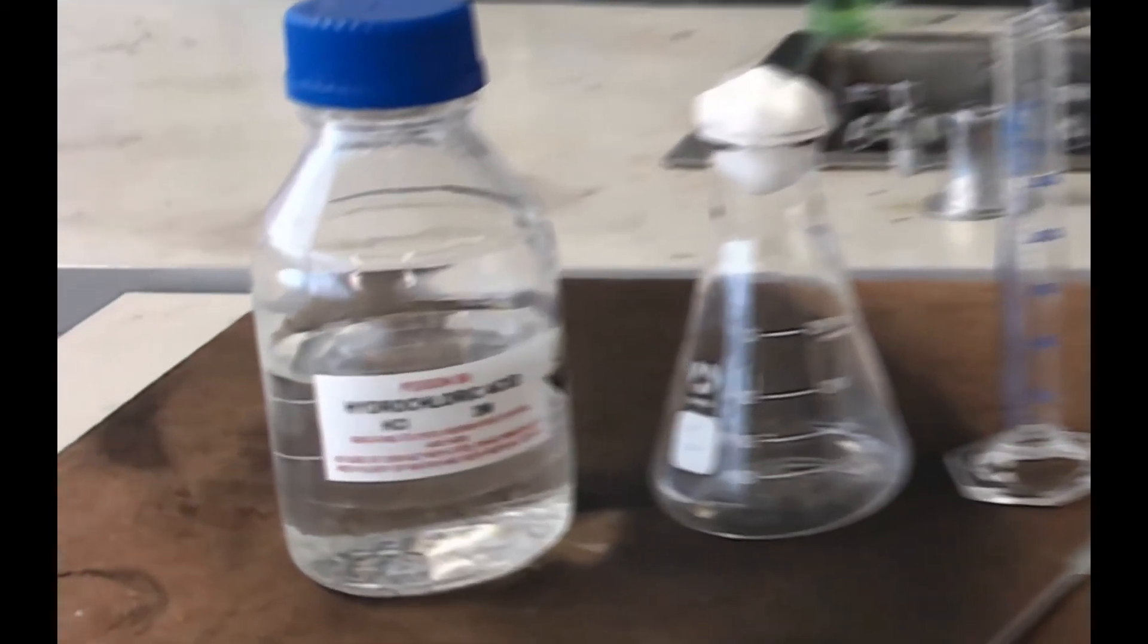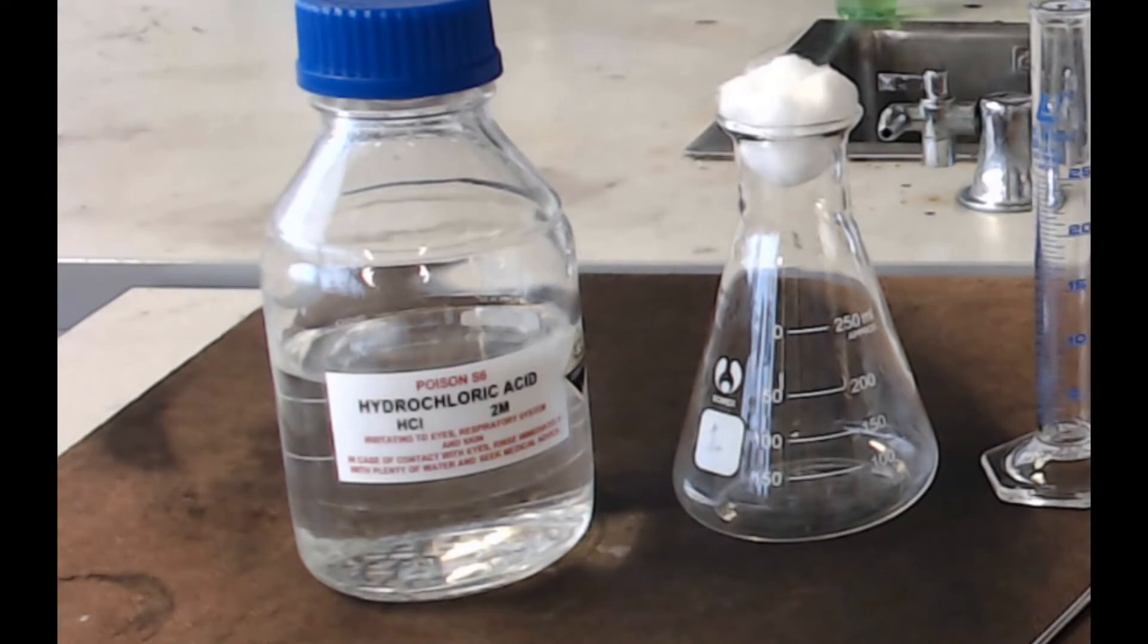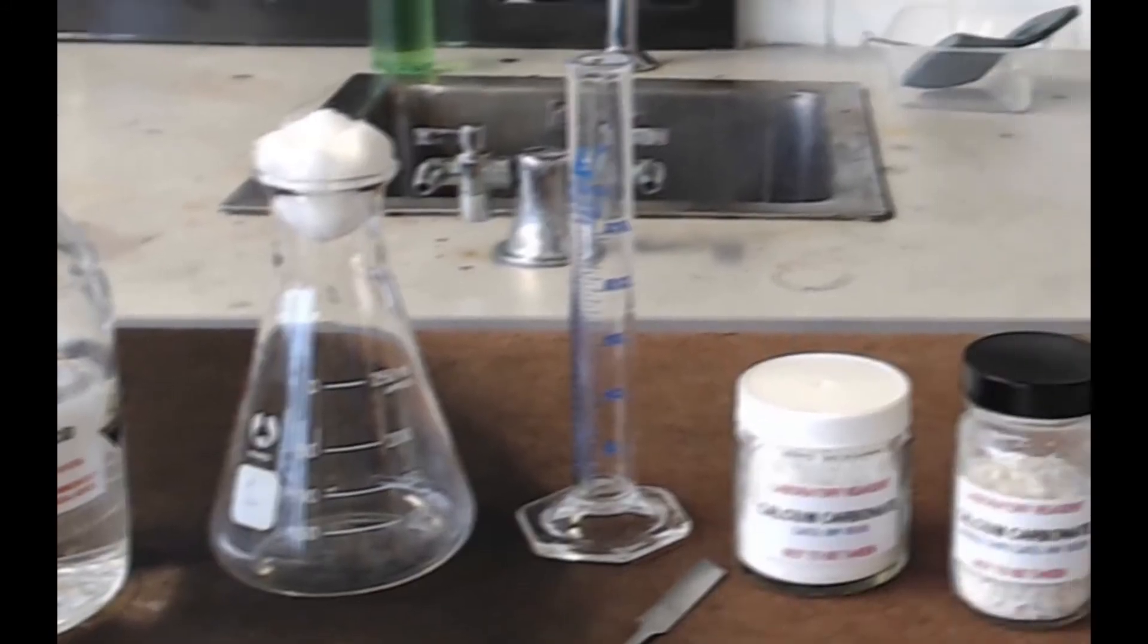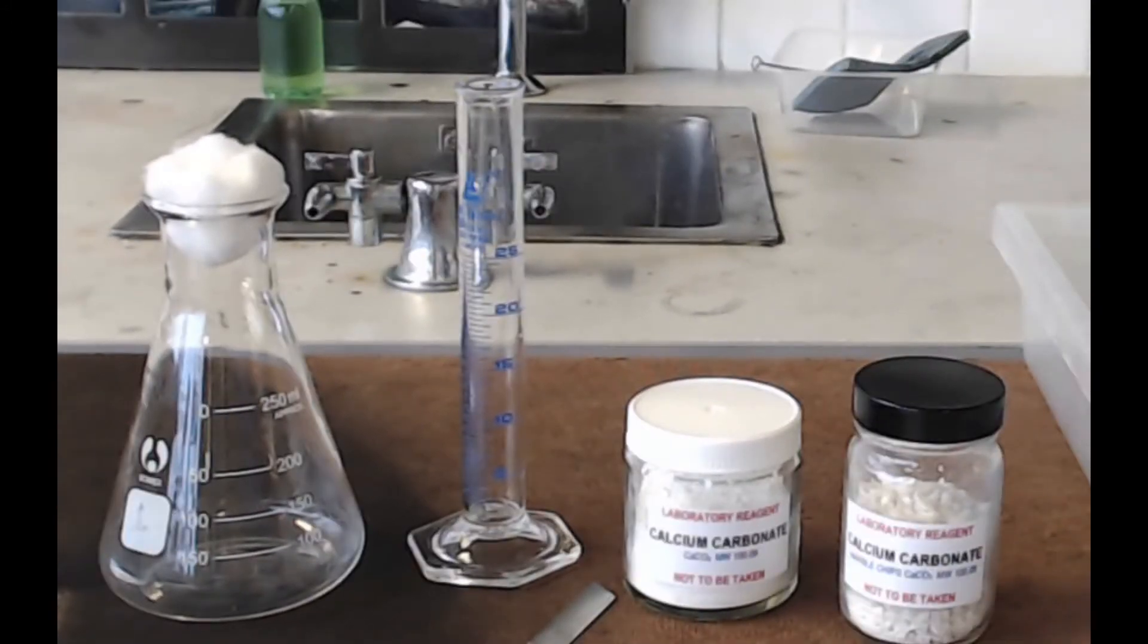You're going to need some 2 molar per liter hydrochloric acid, a conical flask with a cotton wool bud to fit on top, a measuring cylinder - this one's 25ml but you could use any size really.